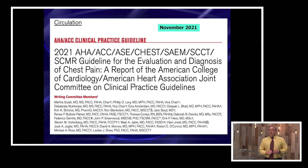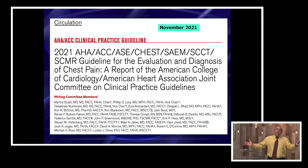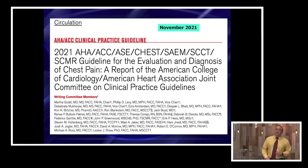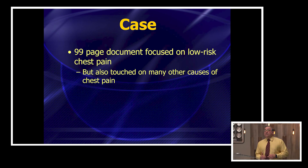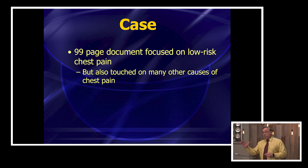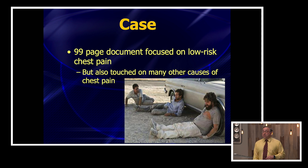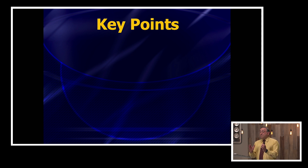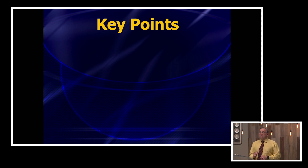Just a few months ago in November 2021, the AHA, the ACC, the ASC, and a lot of big societies came out and published this guideline that I think we all have to know about, and it focuses on these relatively low-risk patients. It's a 99-page novel of a document focused on low-risk chest pain. We went through this entire document, and we're going to save you the trouble of going through all of it and just focus on some of the key points you've got to know. There weren't that many groundbreaking things, but there are just a few key points we're going to summarize.